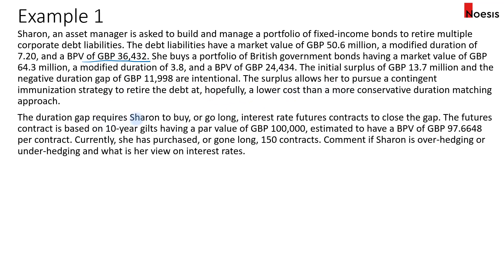The duration gap requires Sharon to buy or go long interest rate futures contracts to close the gap. This futures contract is based on 10-year gilts with a par value of £100,000 per contract, and the BPV is £97.6648 per contract. Currently she has purchased or gone long 150 contracts. Comment on whether Sharon is over-hedging or under-hedging and what is her view on interest rates based on her actions.